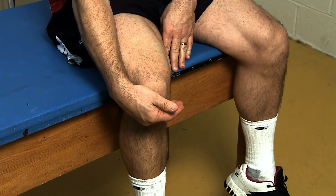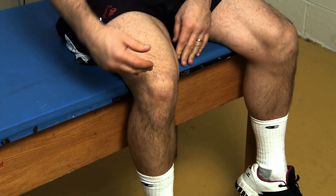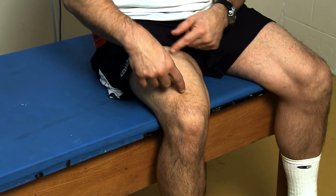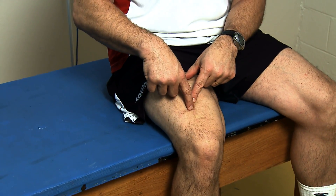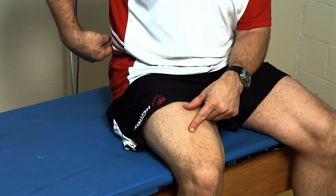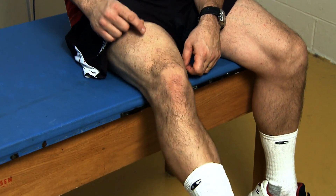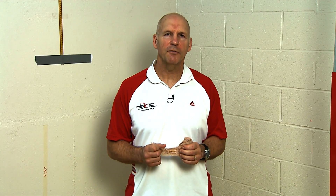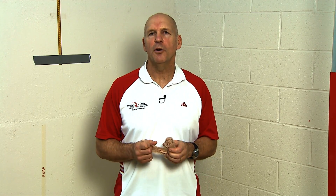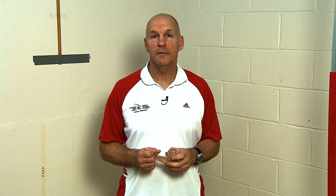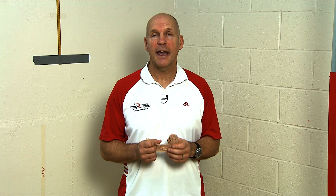To recap: hitting the tendon stretches the quadriceps, the spindles detect this and send a signal back to the spinal cord, causing contraction of the quadriceps and the leg kicks. That's a very simple reflex, but we can use that reflex to our advantage when jumping. In addition to that reflex action, there's another component to the stretch shortening cycle: the mechanical component.